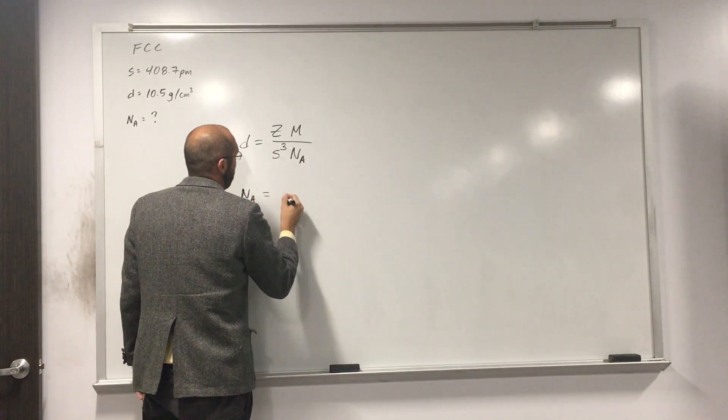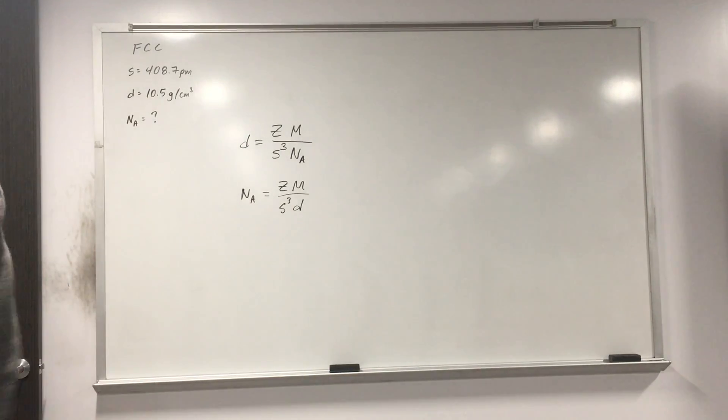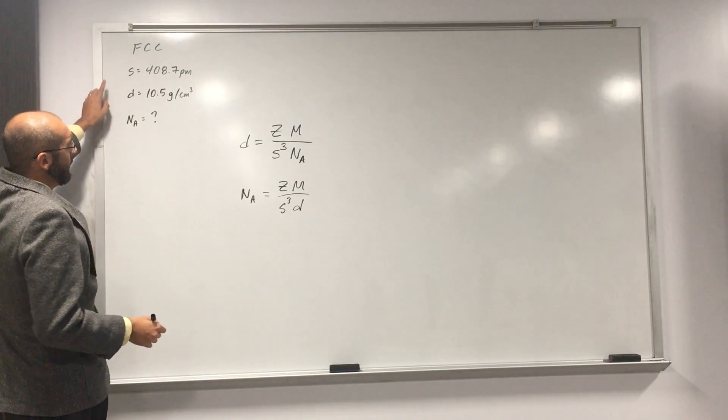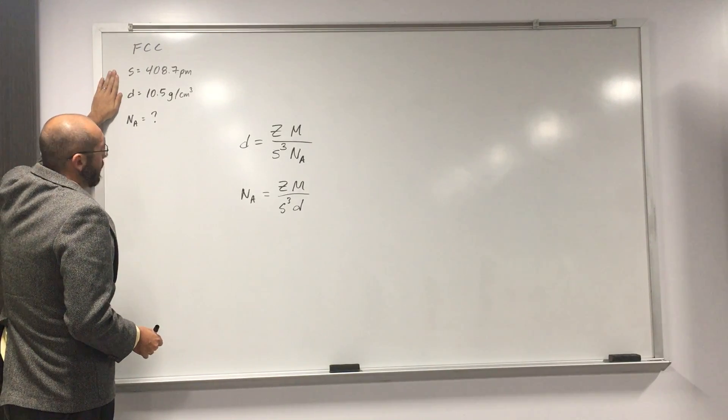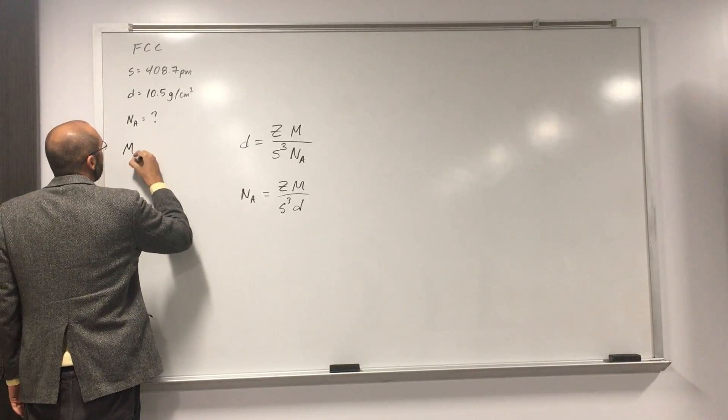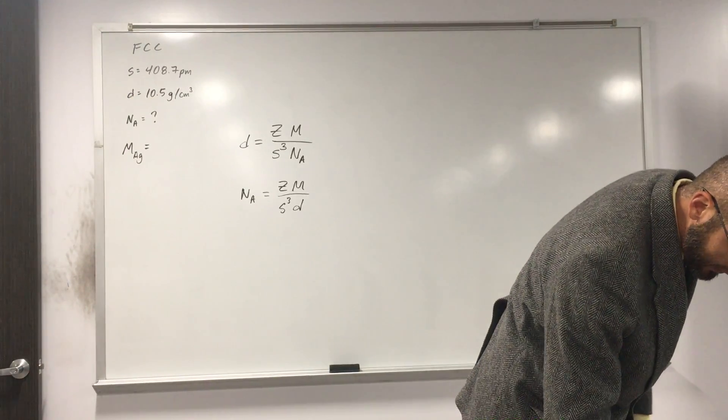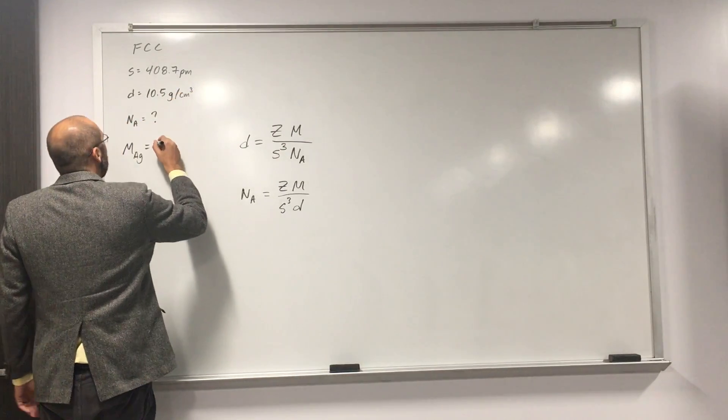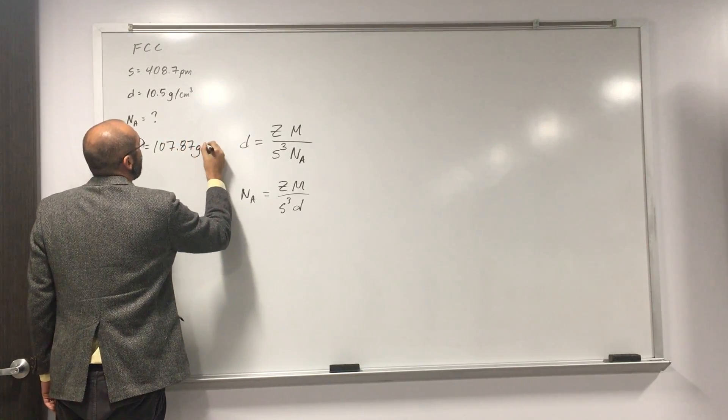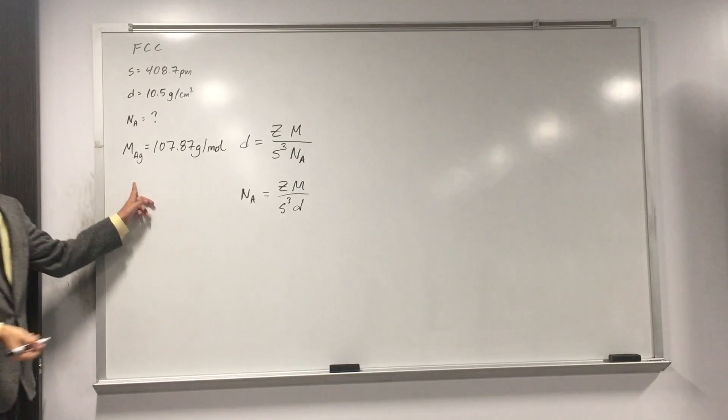So just flip these. So that's the formula that you're going to need. This is the formula we should have been using this entire time. Hopefully we recall it next time we see it. So do we have all of these variables? Density we have, molar mass, well, silver, right? So we can look up the molar mass of silver from the periodic table. And when we do that, it's going to be 107.87 grams per mole.